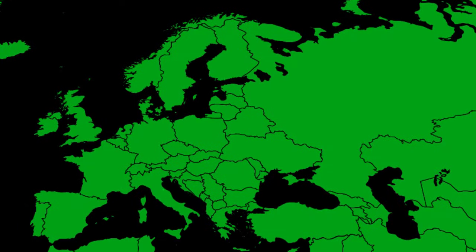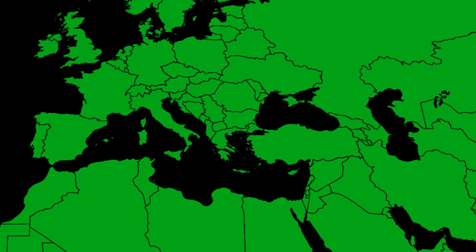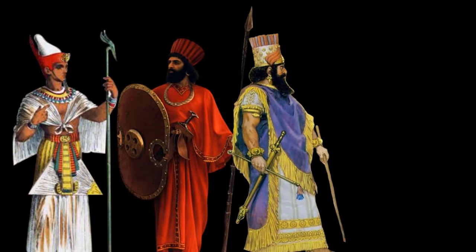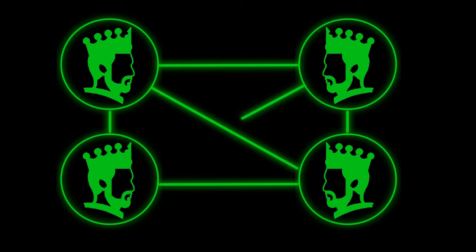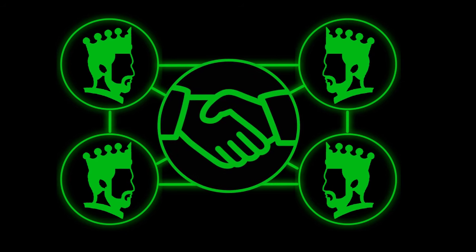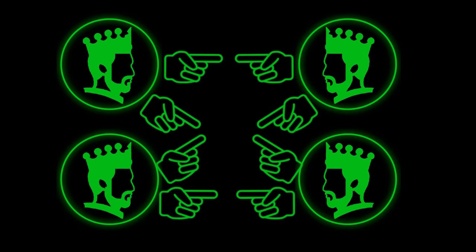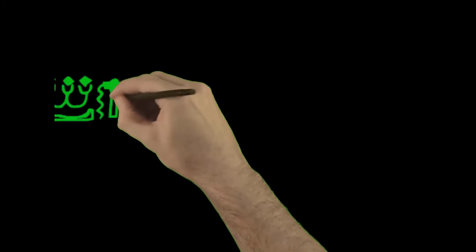Before the emergence of countries in their current form, many kingdoms, empires, and civilizations existed in ancient times, such as ancient Egyptian civilization, Persian civilization, Babylonian, Roman, Greek civilization, etc. Naturally, there were relations between these different civilizations, whether hostile relations and wars or friendly relations and alliances. These relationships resulted in each civilization referring to other civilizations in its records in the context of recording important historical events.